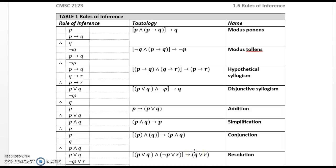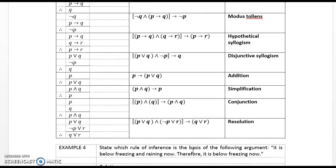Table 1 illustrates the rules of inference. The names of these are modus ponens, modus tollens, hypothetical syllogism, disjunctive syllogism, addition, simplification, conjunction, and resolution. We will be using these valid rules of inference in our arguments as we construct them later on in this lecture.